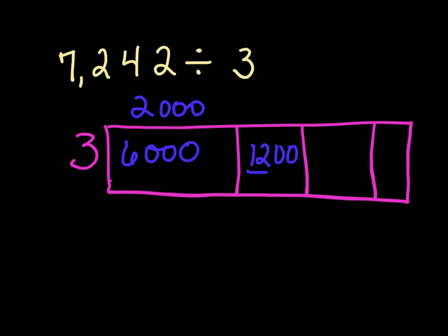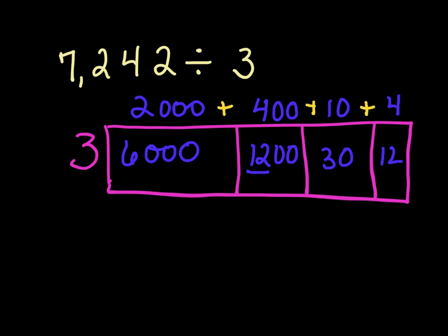3 times what would give us 12? Well, that's 4, and then we have two zeros for 400. Now we're left with 42. 3 times what gives us 42? Nothing. So 3 times what can get close to that 40? That would be 30 — 3 times 10 gives us 30. When we subtract 30 from 42, we're left with 12 ones. 3 times what gives us 12? That would be 4. So now we add up all these digits and we get an answer of 2,414.